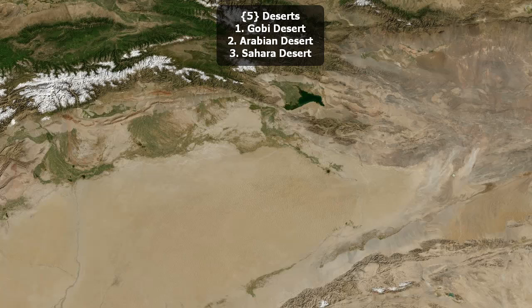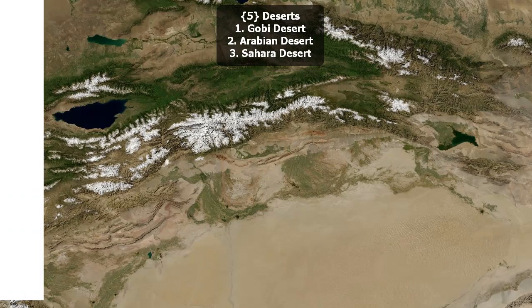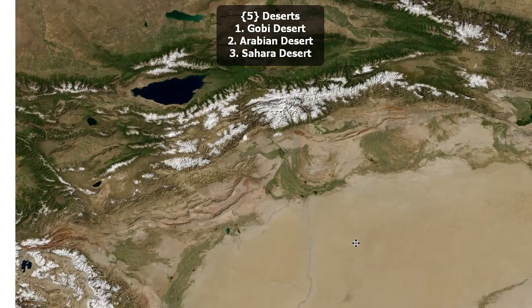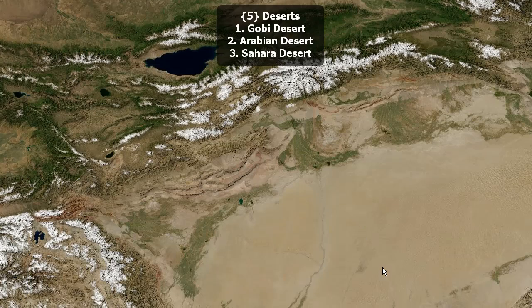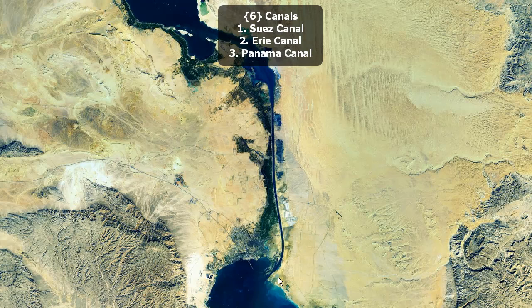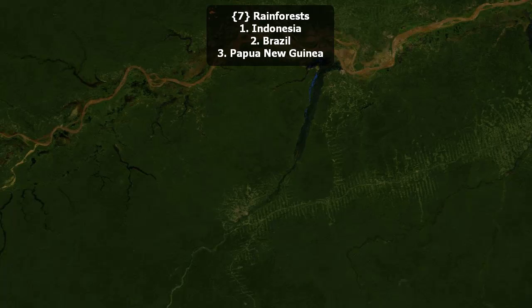Deserts. Gobi Desert, Arabian Desert, or the Sahara Desert? Here's a famous canal. Is it the Suez Canal, the Erie Canal, or the Panama Canal? What landscapes around here and direction of the canal give you clues as to which one it is?